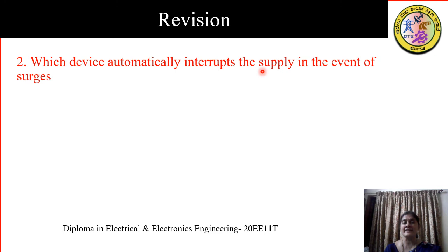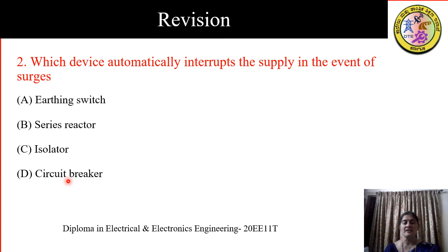The next question is: which device automatically interrupts the supply in the event of surges or fault? Options are: A) earthing switch, B) series reactor, C) isolator, D) circuit breaker. The earthing switch is a mechanical switch used to discharge static charges to earth. An isolator is a no-load switch. So the answer is D, circuit breaker.